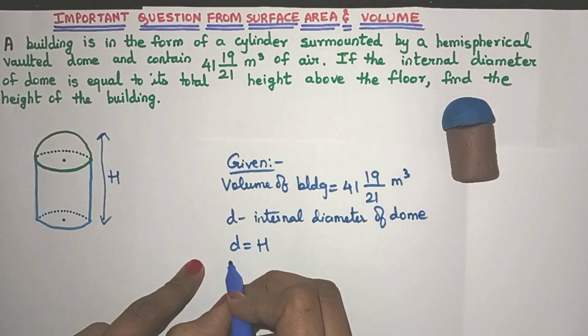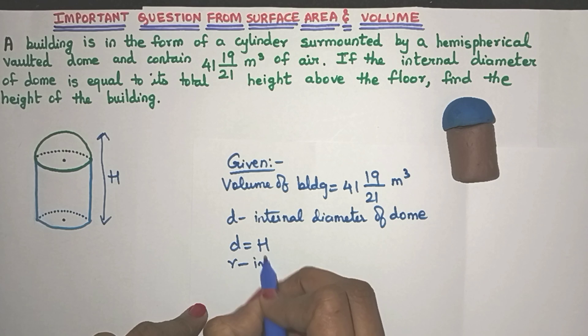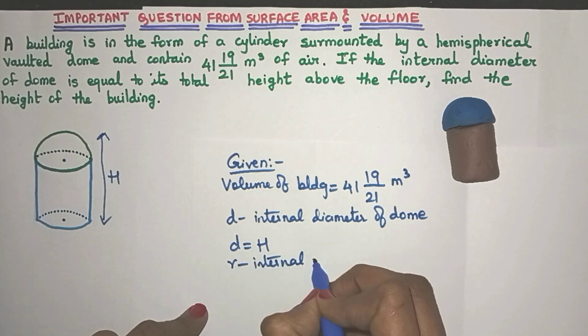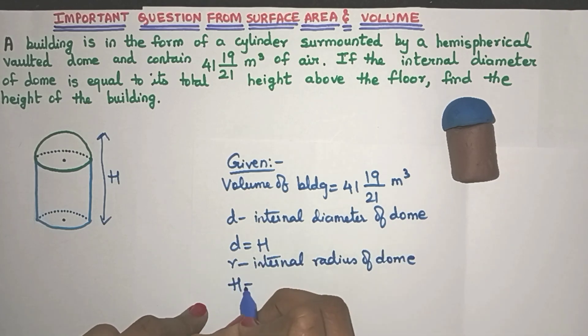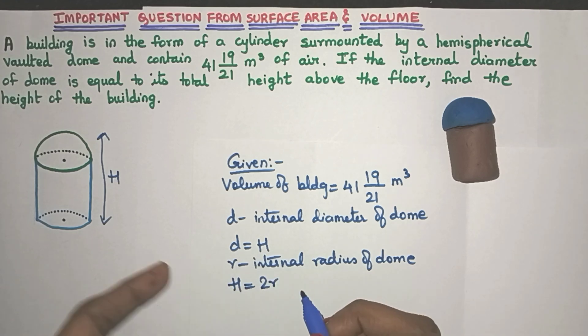Now because we have taken D as the diameter, let us take R as the internal radius of the dome. Can we say that H is equal to 2 times R? Definitely because diameter is twice the radius.